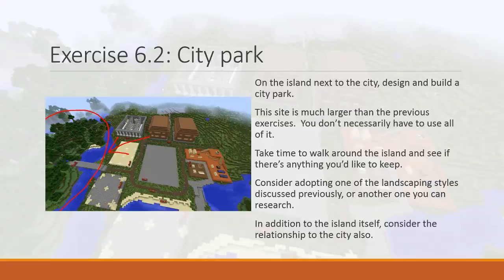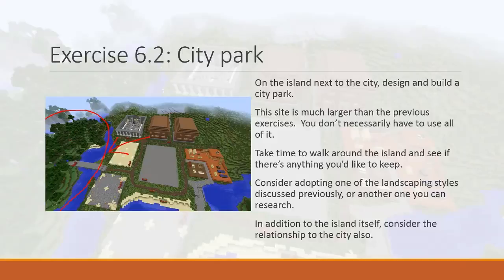Consider using one style, or maybe a mixture of features from several styles. Having a theme or idea makes it easier to design. In addition to the island itself, consider the relationship to the city — what you see when you look across the river from the city toward the garden, and what you see from the garden looking toward the city. Think about placing pavilions or trees to frame views out into the city. I'll talk about this in more detail in the next video as I work through the exercise myself.